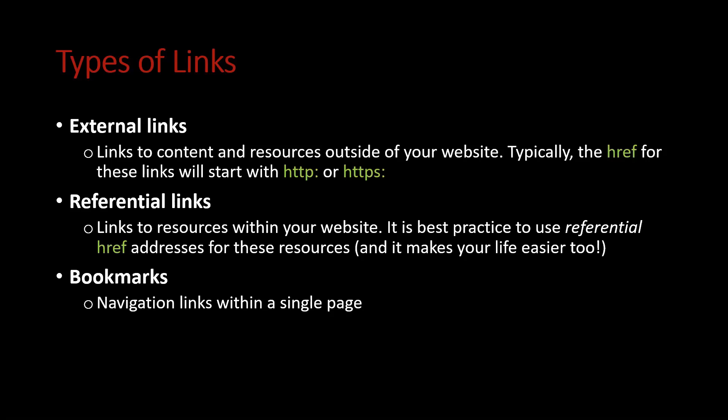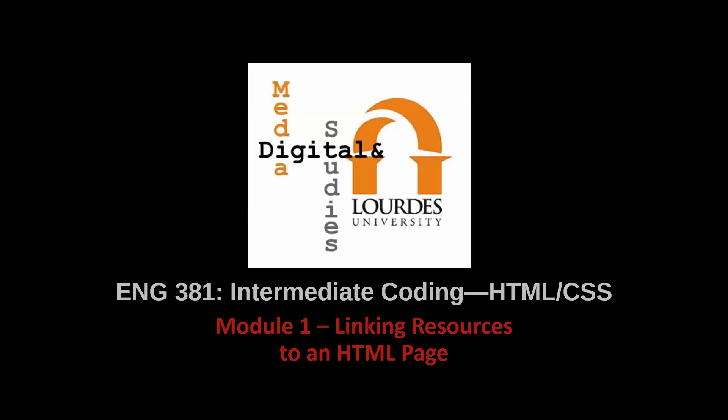And then finally, bookmarks — those are just navigation links within a single page. These are the different types of links we can accomplish with HTML, and there are different tags for doing these depending on what kind of resource you're linking to and what kind of connection you're establishing. Conceptually, keep clear in your mind whether you're talking external, referential, or bookmarks, and then we'll get into the details of each of these types of links in the next video.